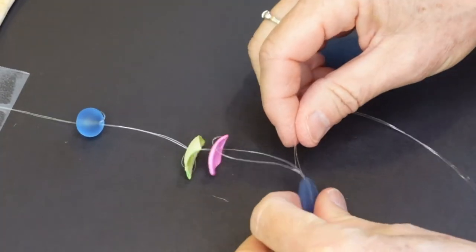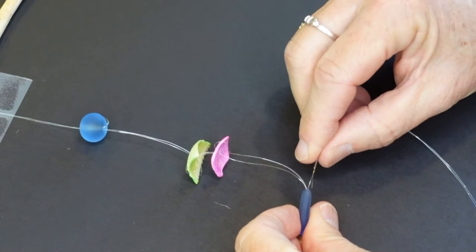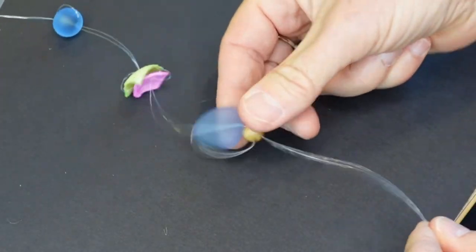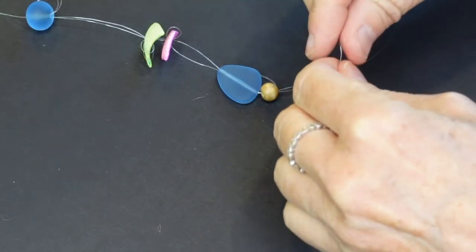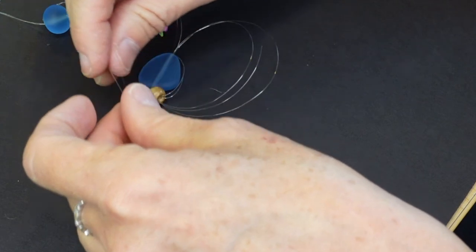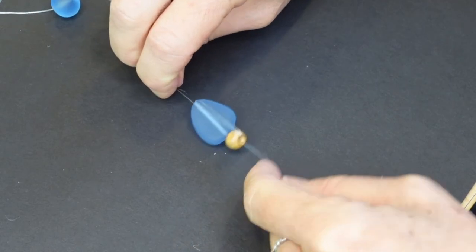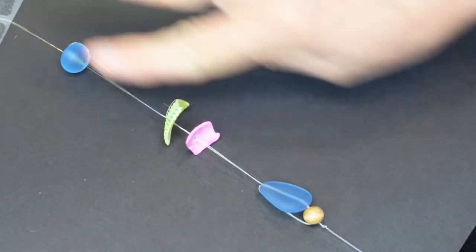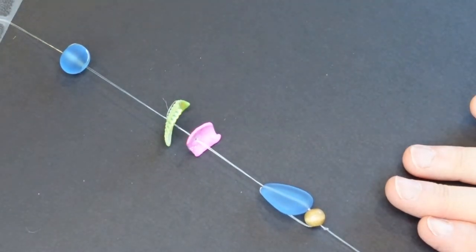So then we're going to feed everything through again to hold it in place. Isn't that pretty? I want to move it up a little bit. Feed it through again. Make sure you feed it through both parts. And then tie a little knot at the end. And there you have your first hanging piece.